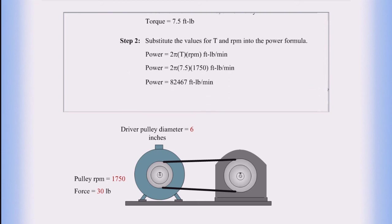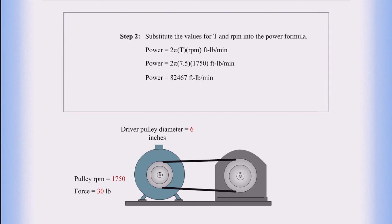Step two: Substitute the values for T and RPM into the power formula. Power equals 2π times T times RPM in foot-pounds per minute. So power equals 2 times π times 7.5 times 1750 in foot-pounds per minute. So power equals 82,467 foot-pounds per minute.